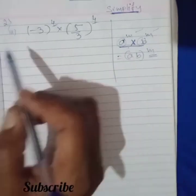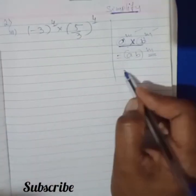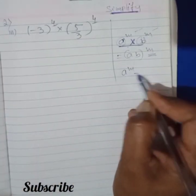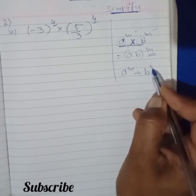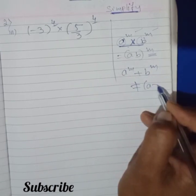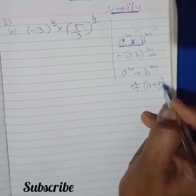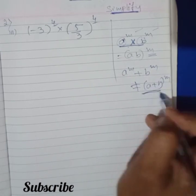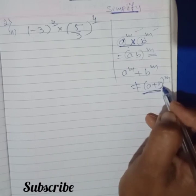Be careful with this one. Don't get confused. A raised to m plus B raised to m is NOT equal to A plus B raised to m. This is wrong.